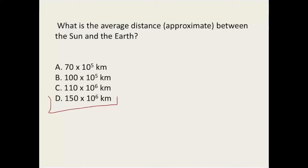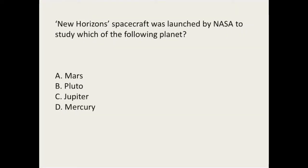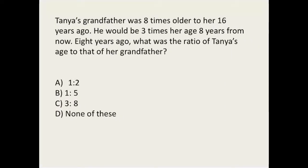There are very important questions related to earth and space. The shape of the earth is an oblated sphere, and there are many other questions you should go through, like why Earth's climate is changing. The New Horizons spacecraft was launched by NASA to study Pluto, so the answer is B — Pluto is the right answer. After this spacecraft's mission, Pluto was removed from the list of planets.